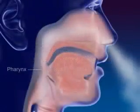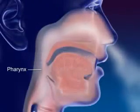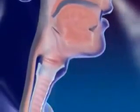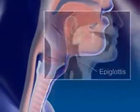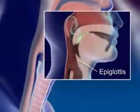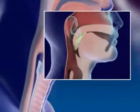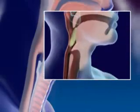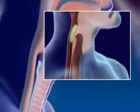Air moves into the pharynx, or throat, the common passageway for food and air. Air continues on to the larynx. The epiglottis, a flap of tissue in front of the larynx, closes off the larynx when swallowing to prevent food from entering.